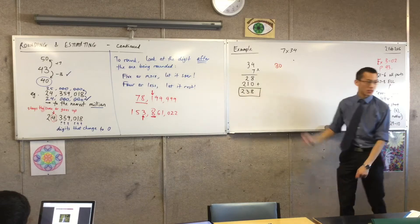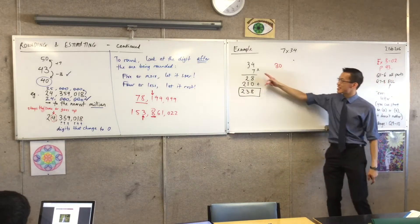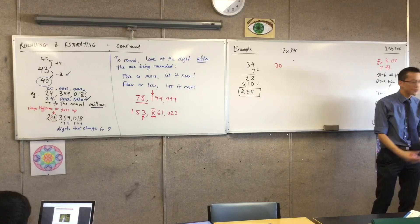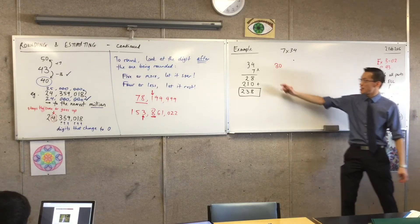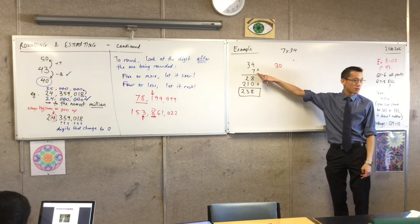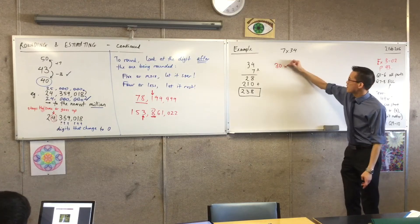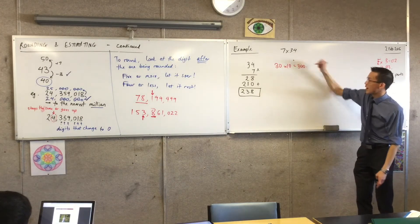And then when I look at 7, I can round that to the nearest 10. I don't have to, but I might as well. The nearest 10 to this is 10. So 30 times 10, that's super easy. That's 300.